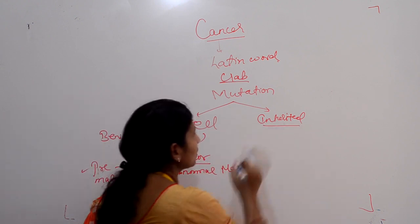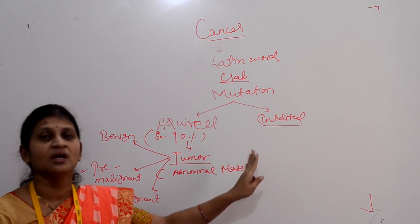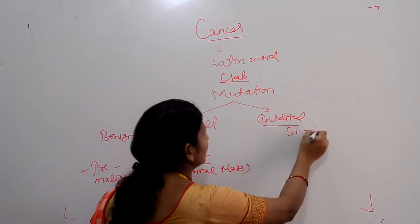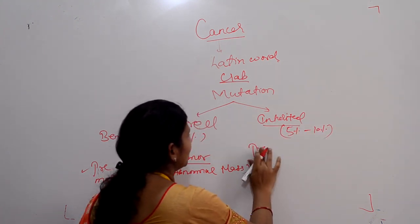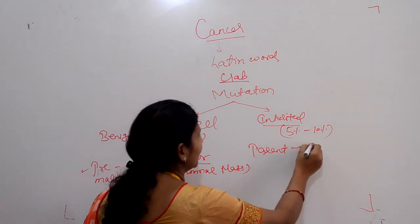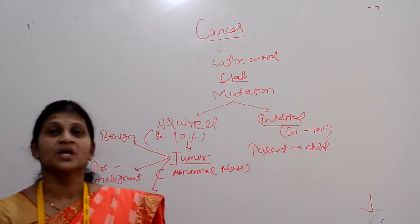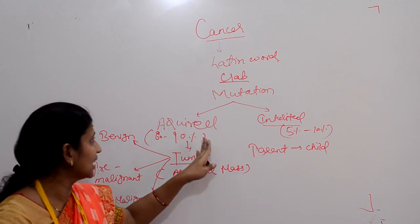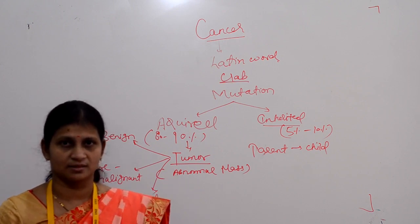Inherited mutation accounts for 5 to 10 percent of cancer. These types of mutations are inherited from parent to their child. So two types of mutation, acquired and inherited, are responsible for development of cancer.